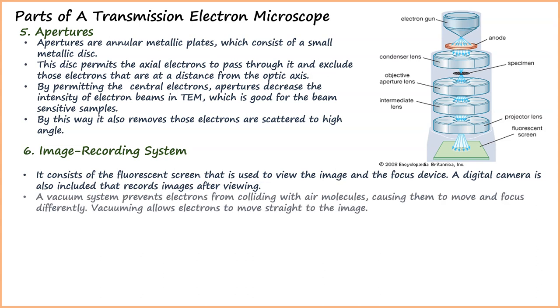A vacuum system prevents electrons from colliding with air molecules, causing them to move and focus differently. Vacuuming allows electrons to move straight to the image. The vacuum system consists of a pump and gauge, valves, and a power supply.